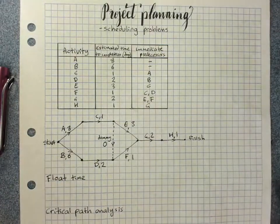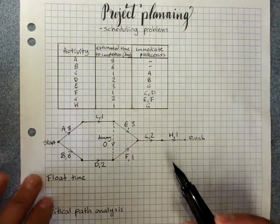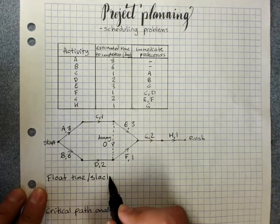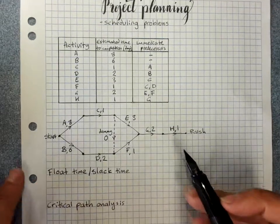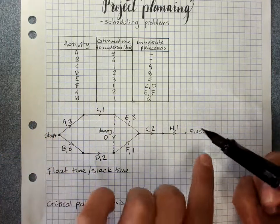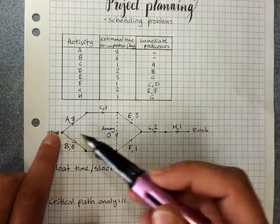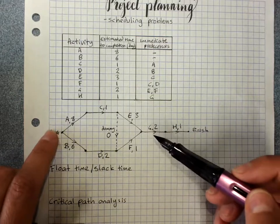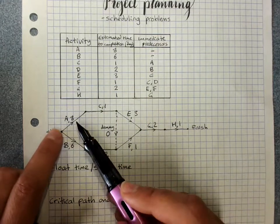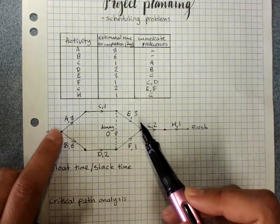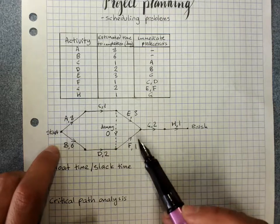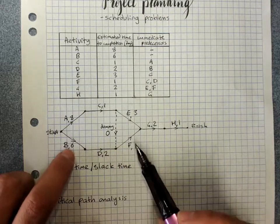Now, what we need to look at is something called float time or slack. If we just have a look at this little bit here, from the start to the finish, there's two different paths that both have to happen before we can get to activity G and hence to the finish. To get A, C, and E done will be 9, 10, 11, 12 hours. That's the minimum time to get those done. To get B, D, and F done will be 6, 7, 8, 9 hours.